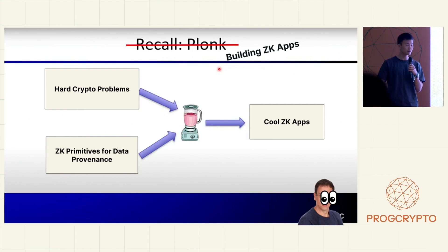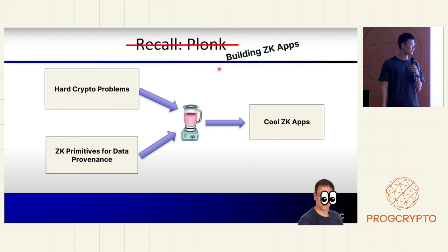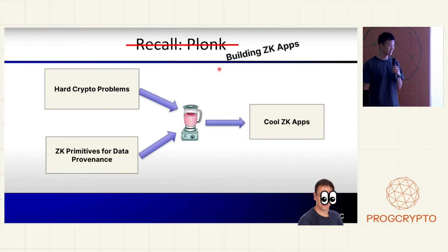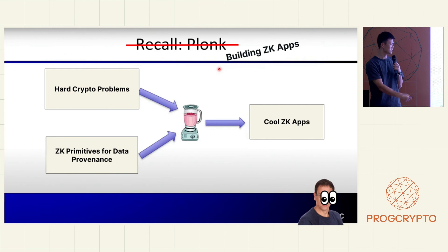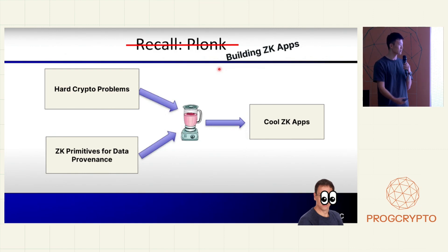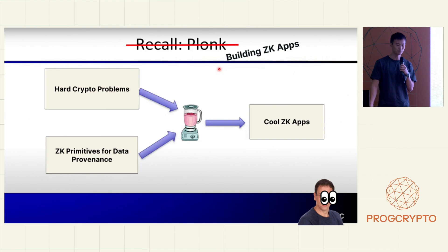This is a talk about ZK applications. We're not going to talk about polynomial IOPs or PCSs or any of that. Instead we'll talk about hard crypto problems, ZK primitives for data provenance, and how those two things can be mixed together to create really cool ZK applications.